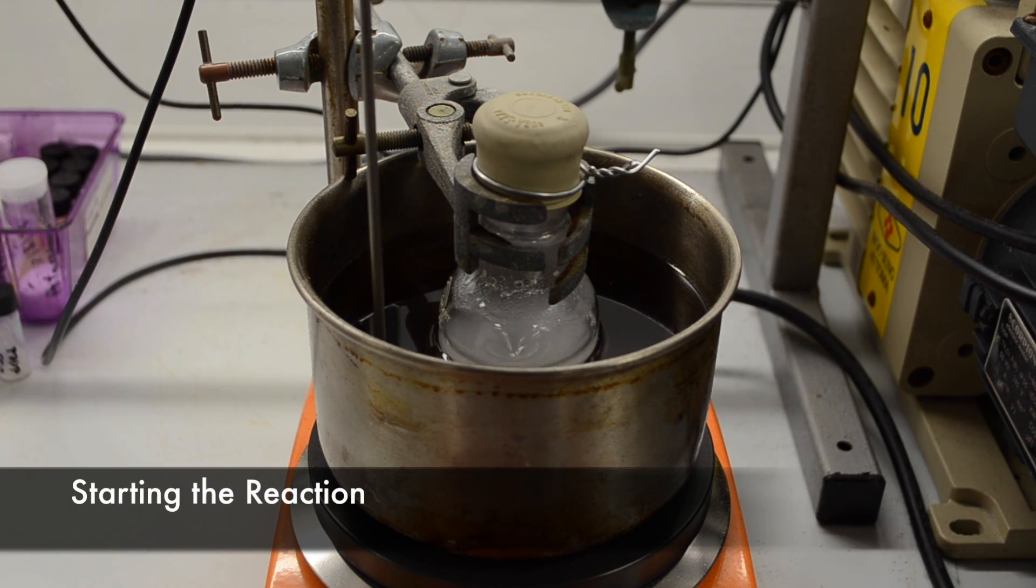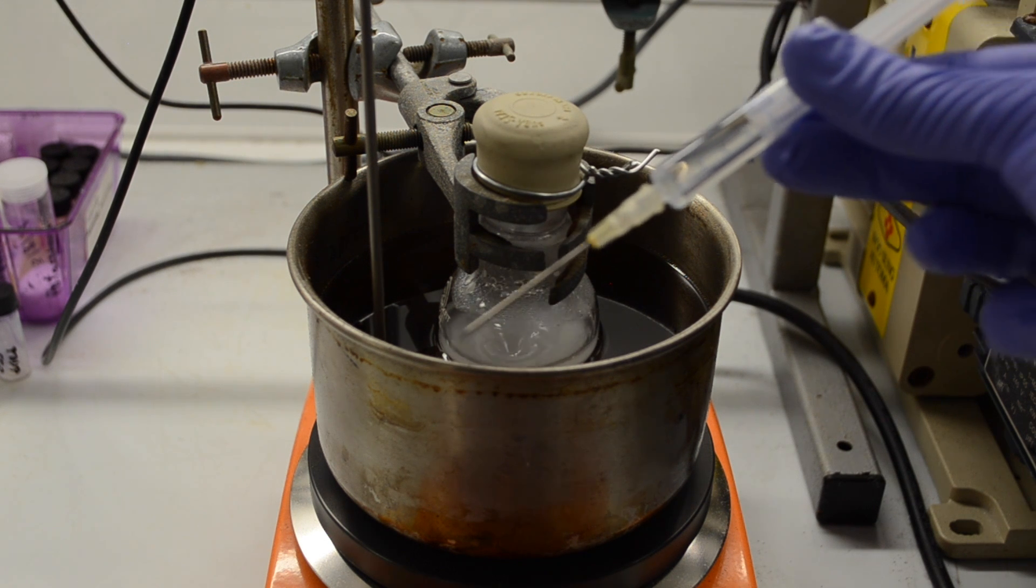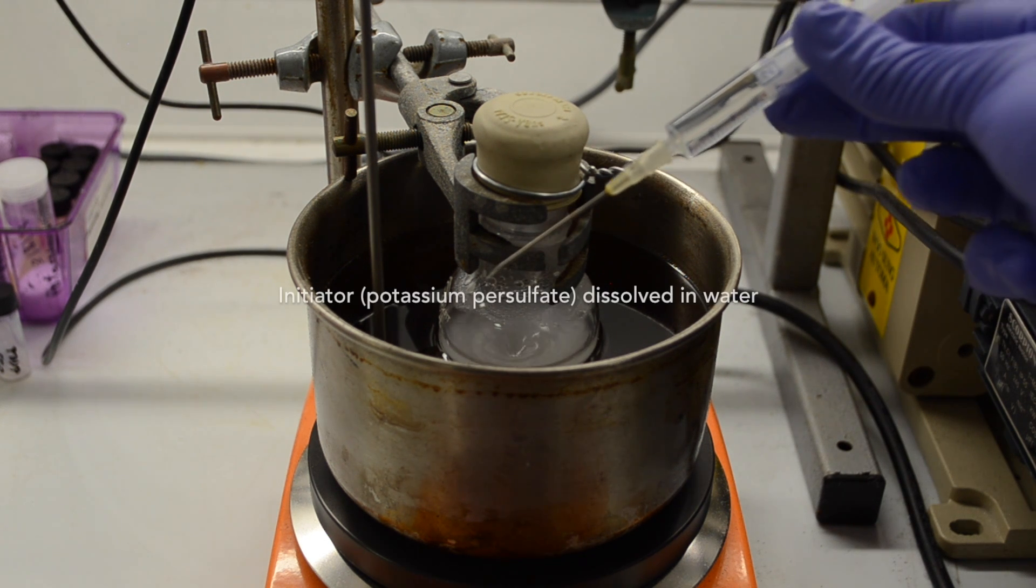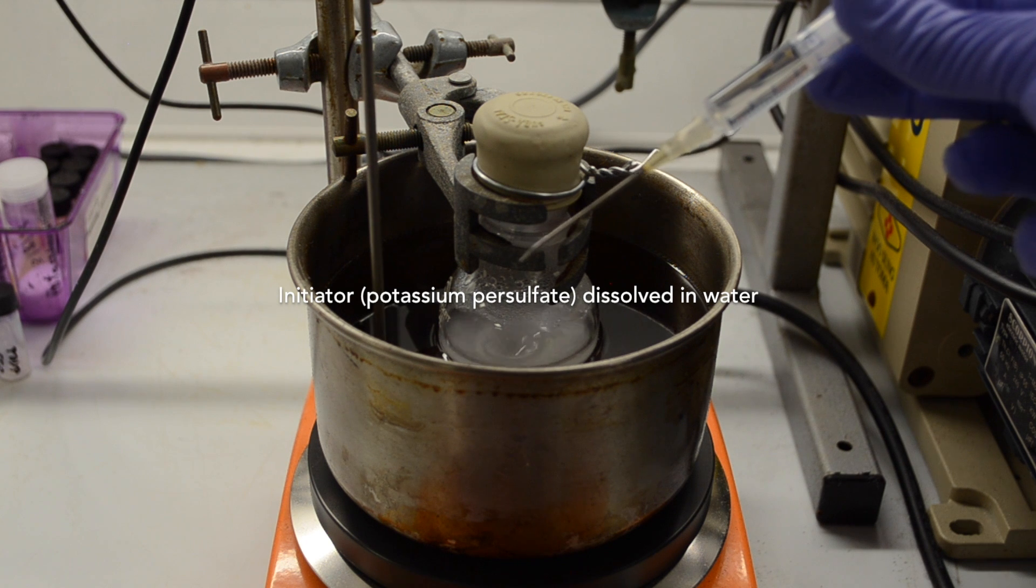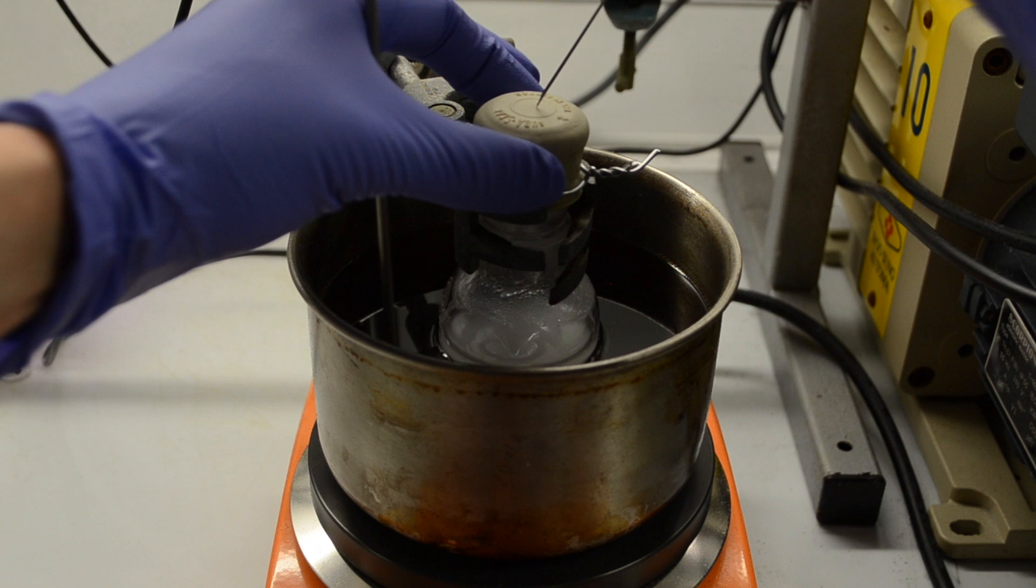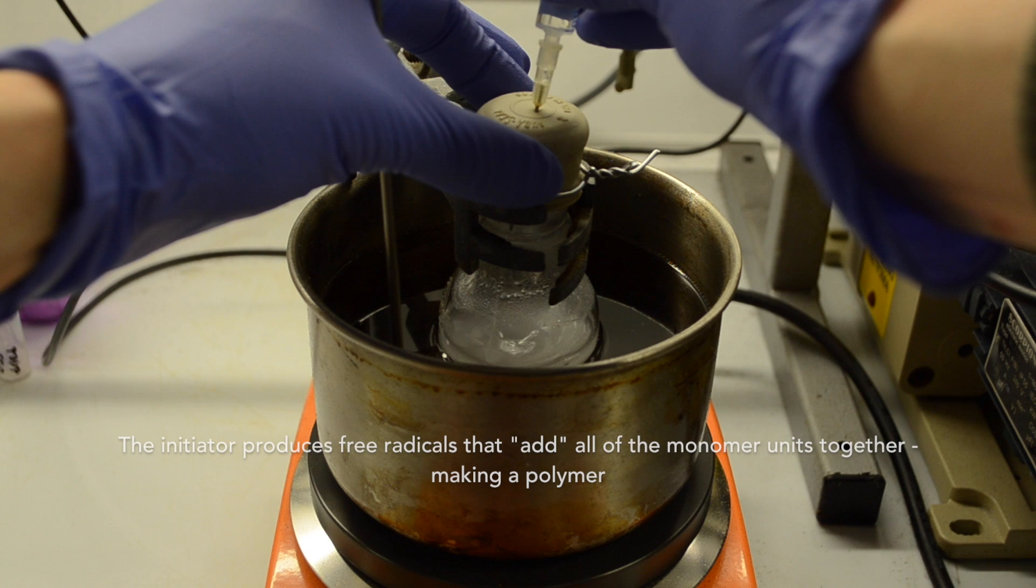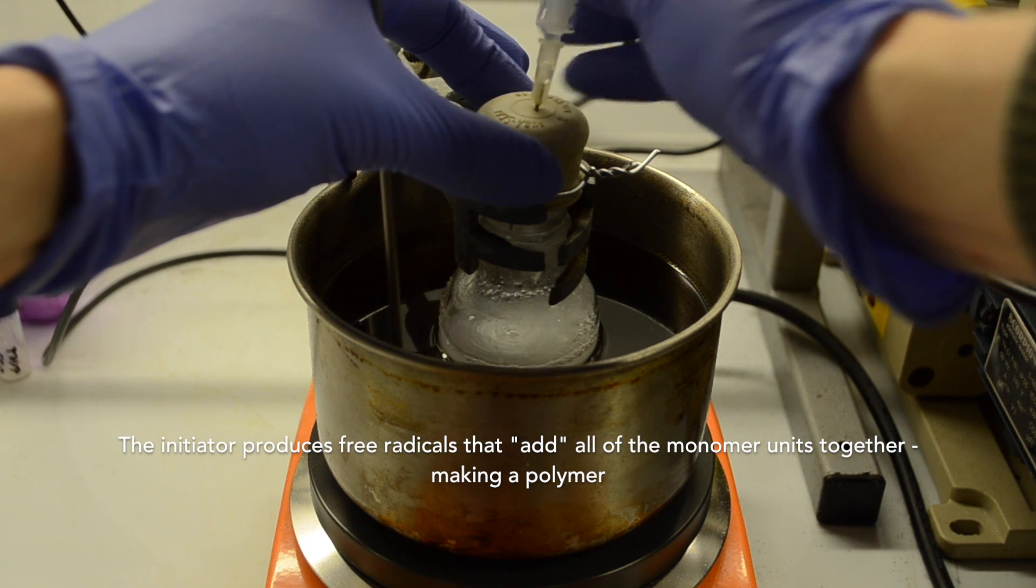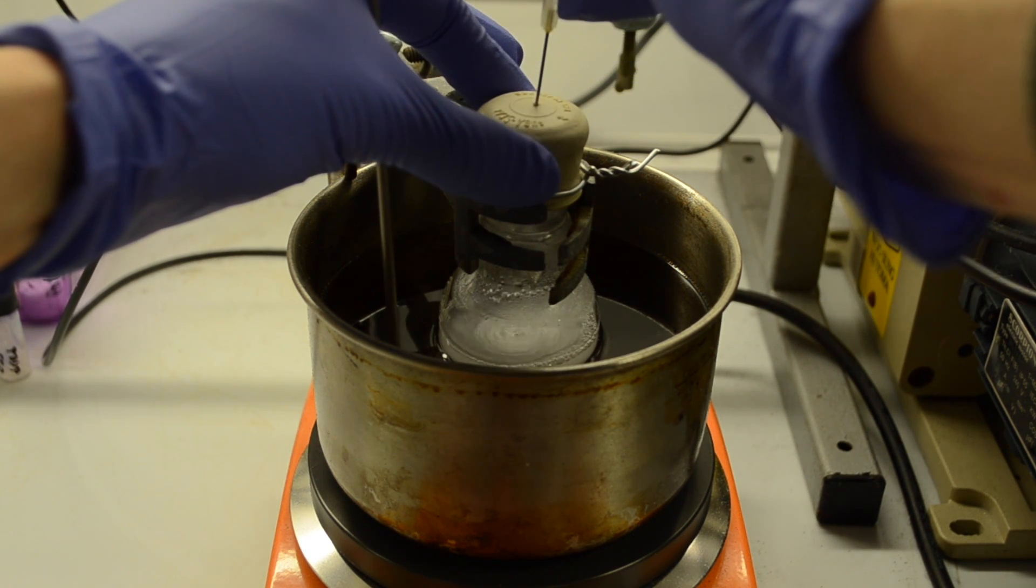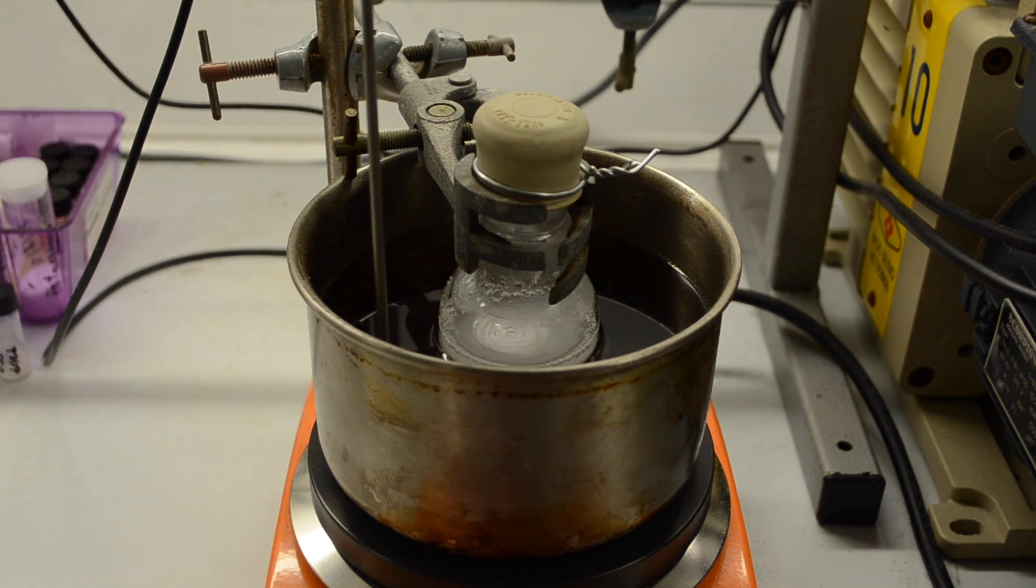So we're about to begin our reaction now. I've immersed our starting solution in our oil bath, which is set to 90 degrees to allow it to heat up. And what I'm now going to do is inject our initiator using this syringe and needle through the rubber septum at the top of the flask. So we'll just put that in there safely and inject our initiator. Our initiator is already dissolved in a bit of water. Pull that out and away we go.